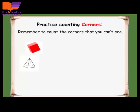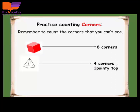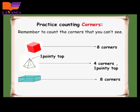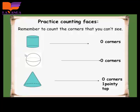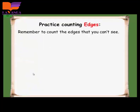Let's remember to count the corners that we can't see. The cube has 8 corners. The square-faced pyramid has 4 corners and 1 pointy top — 1, 2, 3, 4 corners and this is the pointy top. The rectangular prism also has 8 corners like the cube. The cylinder has 0 corners because it has no edges. The sphere has 0 corners, and the cone also has 0 corners but 1 pointy top.